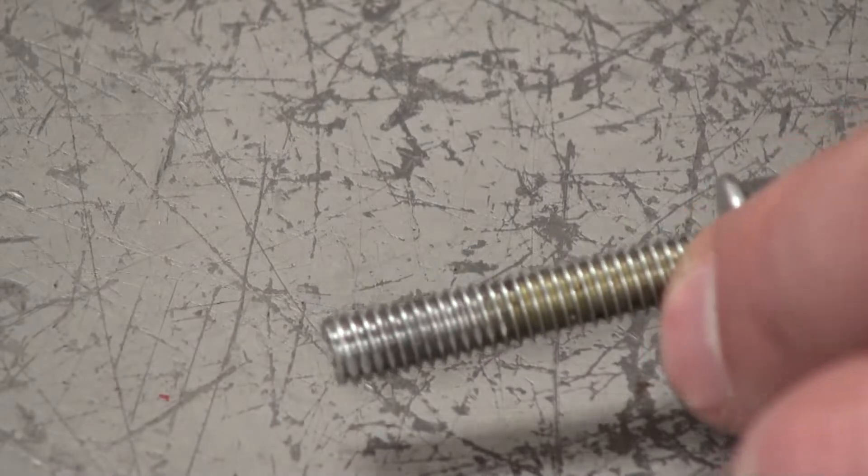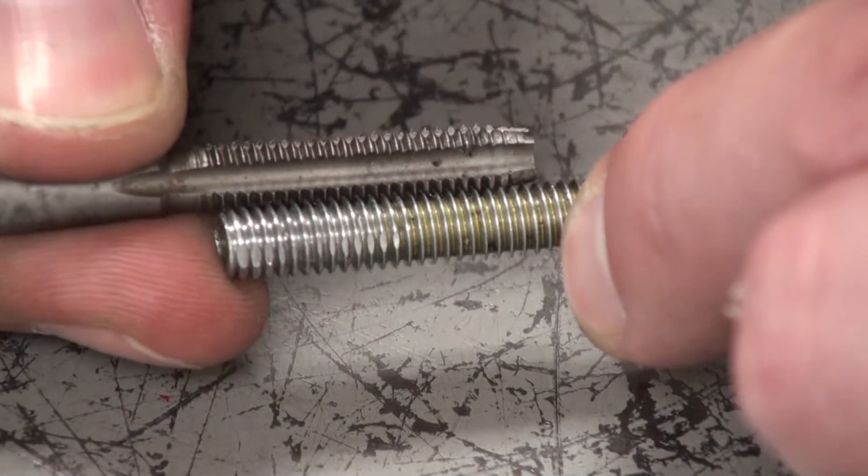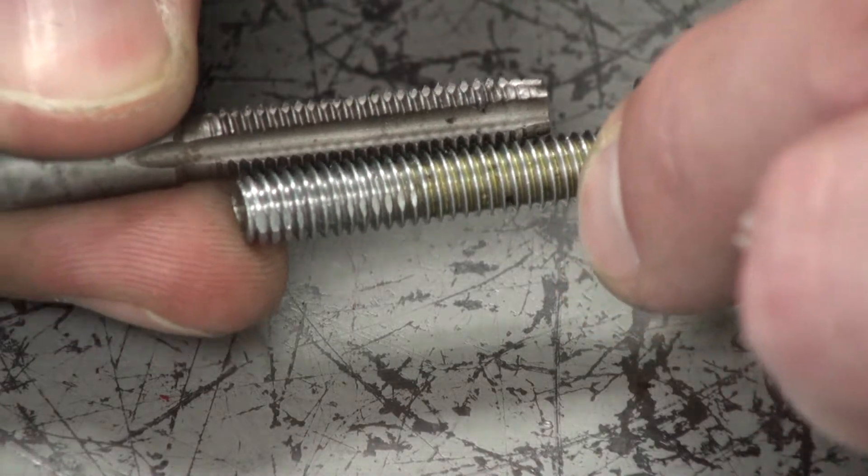Now if you don't have a pitch measuring tool, you can always do a bit of trial and error and try different taps and make sure one of them fits perfectly with your bolt. Once you find that tool, you can find its corresponding die and that'll work perfectly for your bolt and nut.